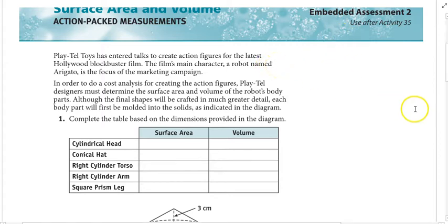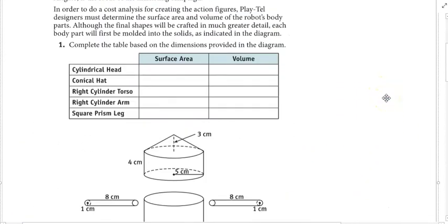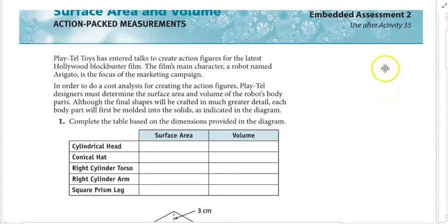So here I have a blank version of the embedded assessment. You can get this from the Unit 5 PDFs at the very end. I think it's on page 93 there, but in the book it says it's on page 523. It's on page 93 of the PDFs in Unit 5 though.